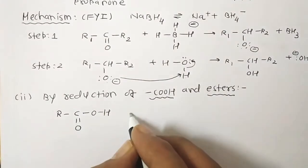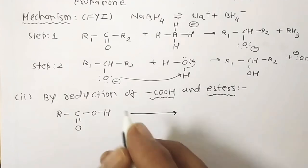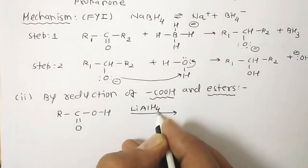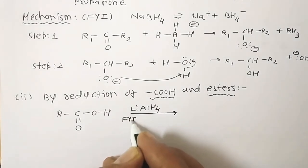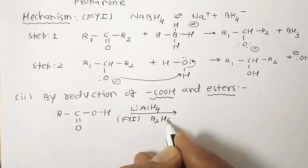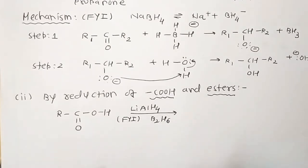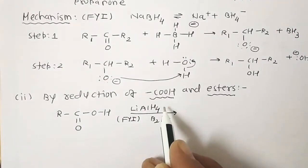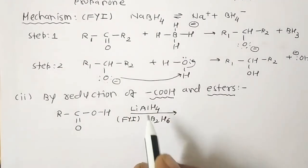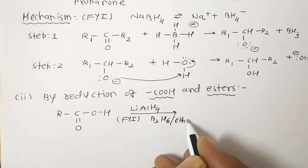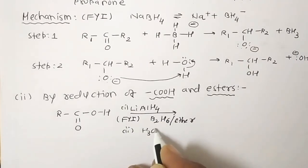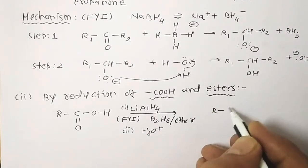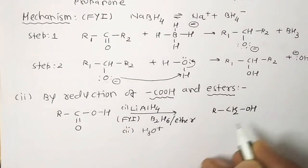Reduction of carboxylic acid with LiAlH₄, or alternatively with diborane (B₂H₆) in ether as step one, followed by hydrolysis with H₃O⁺ as step two, gives a primary alcohol. Diborane, however, does not easily reduce certain functional groups — it does not perform reactions with esters, nitro compounds, or halo compounds. That is a limitation of diborane. But diborane is very good — better compared to lithium aluminium hydride — for reducing carboxylic acids. In competitive examinations, questions are asked about why diborane is preferred or which compound is not reduced by diborane.